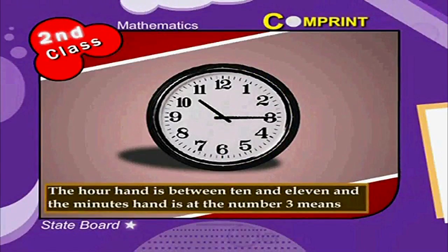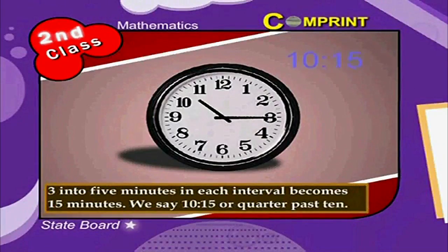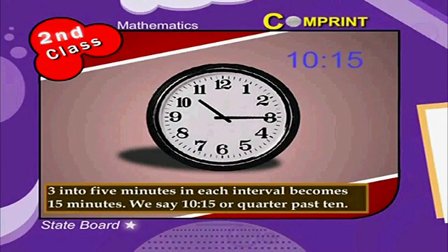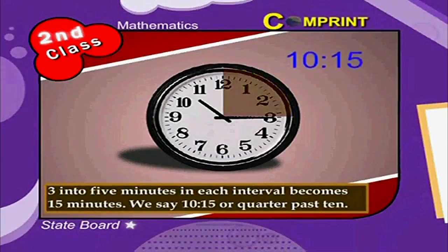Here is another clock. The hour hand is between 10 and 11, and the minutes hand is at the number 3. That means 3 intervals into 5 minutes each becomes 15 minutes. We say 10:15, or quarter past 10.